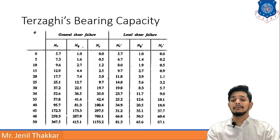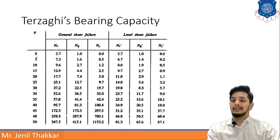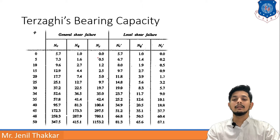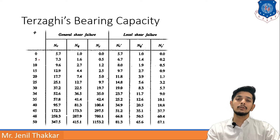Terzaghi has given a table where, according to φ and the type of failure — general or local shear — the values of N_C, N_Q, and N_γ will change. For example, when φ = 0 (pure cohesive soil), specific values are provided. If the angle of shearing resistance falls between tabulated values — say between 0 and some φ — we have to interpolate to find the constants.